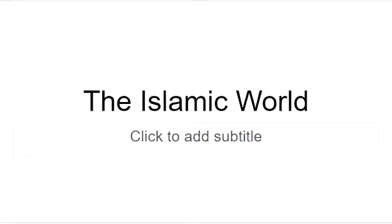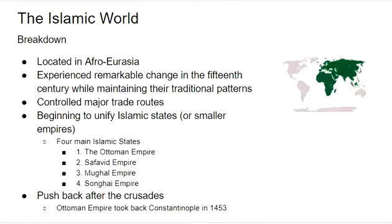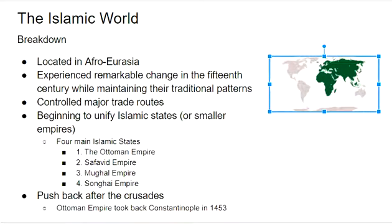Today we're going to talk about the Islamic world — multiple Islamic empires that made up the Islamic world. These empires were expanding in the 15th century. Located in Afro-Eurasia, there were some Islamic empires in Africa, some up in Europe, and some in Asia. These empires experienced remarkable change in the 15th century while maintaining their traditional patterns.